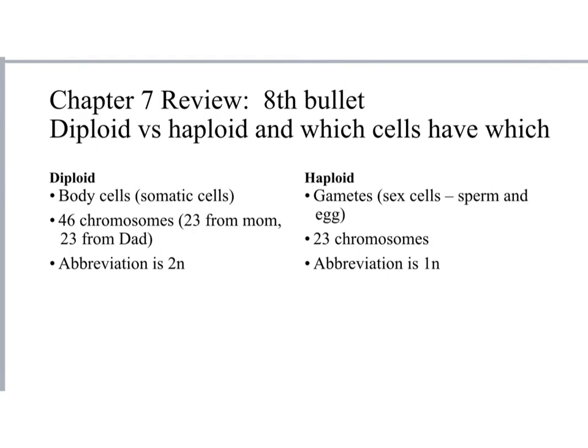Know the terms diploid and haploid and which cells are which. Diploid cells have 46 chromosomes — 23 from mom and 23 from dad — and include all body (somatic) cells. They are abbreviated 2N. Haploid cells are sex cells — gametes, sperm, and eggs — with only 23 chromosomes, abbreviated 1N.